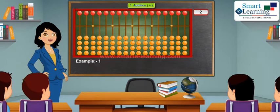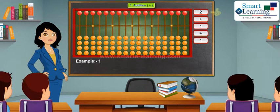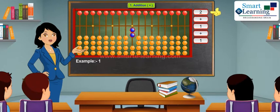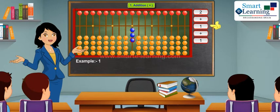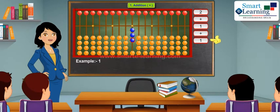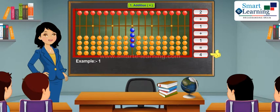Let's add 2 plus 1 plus 1. Take 2 earthen beads upward to show number 2 on one's place, and to add 1 bring 1 more earthen bead up. Now we have to add 1 more so we will bring 1 more earthen bead up. To read the answer we will read value of all the beads together, that is 4.